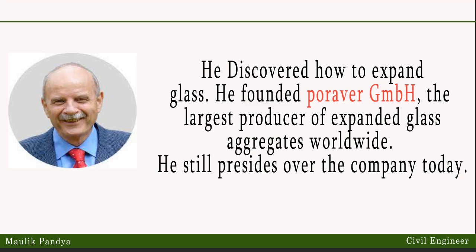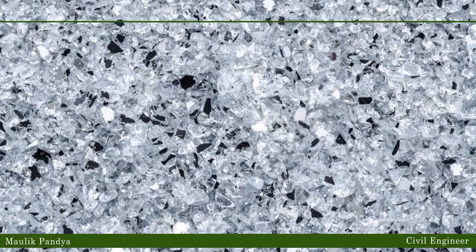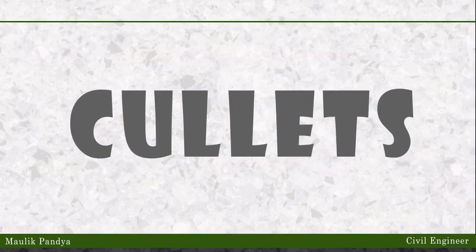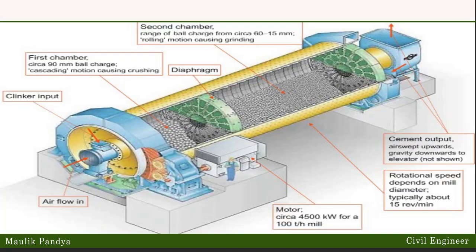He still presides over the company today. Denner's process begins with a very fine gradation of post-consumer recycled glass called cullet. This unrefined soda-lime glass arrives at the plant simply pulverized to fit into a certain particle size range. The glass is then dried and quickly sent to the ball mill where it is ground down to very fine flour.